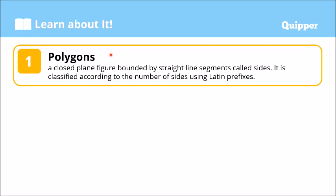Now, what is a polygon? A polygon is a closed figure — a closed plane figure, bounded by straight line segments called sides. And it is classified according to the number of sides using Latin prefixes.